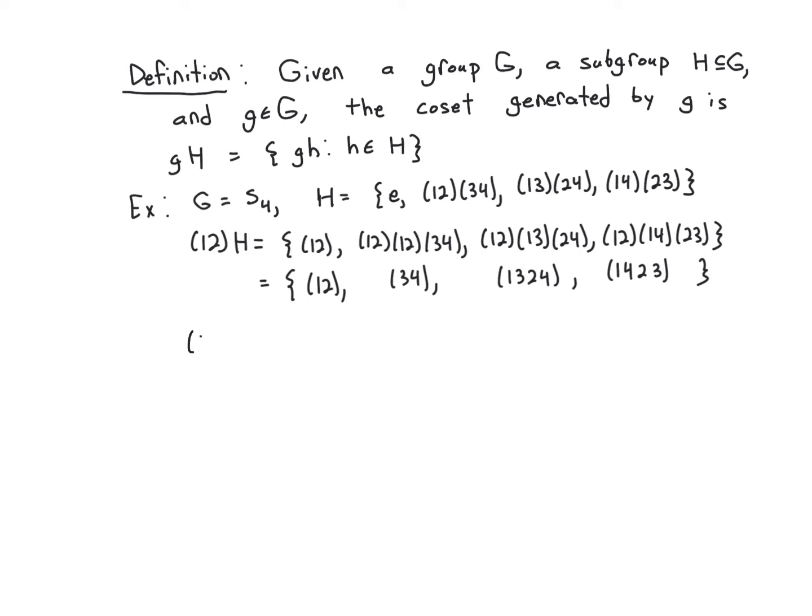Similarly, I could ask, what is the coset (3,4)h? Well, it's going to have the element (3,4). It's going to have the element (3,4)(1,2)(3,4). Three, four, one, three, two, four. And three, four, one, four, two, three.